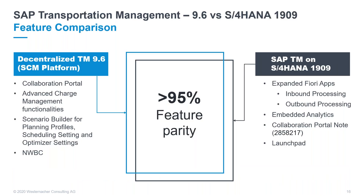Of course, if you are a small mom-and-pop shop just having a couple of trucks and manually assigning your transportation demands, there will be no need for a professional advanced shipping license model using 3D or VSR optimization. In conclusion, for the comparison between sidecar 9.6 and S4 HANA 1909, both releases provide almost the same features if we compare the full-blown with the professional shipping license for TM. There is a difference of only around 5%, and the current differences mostly refer to the different UIs and analytical options that S4 currently offers.